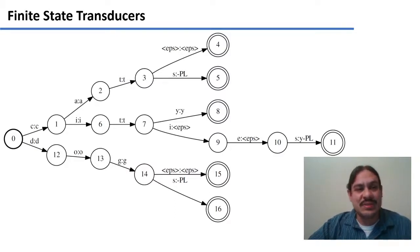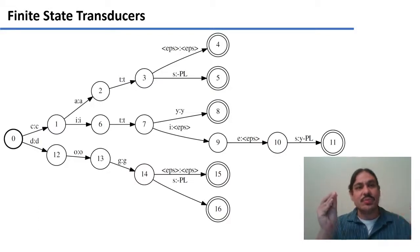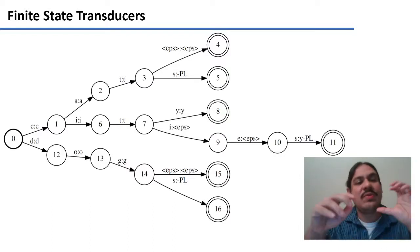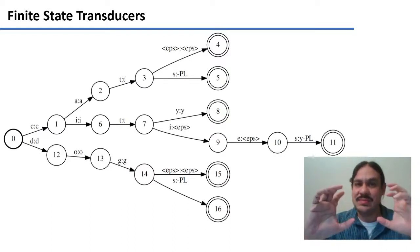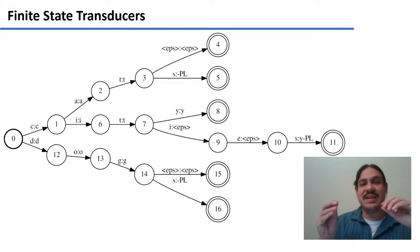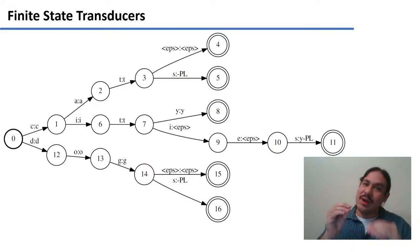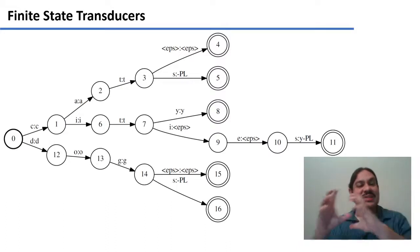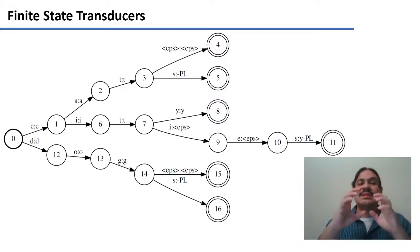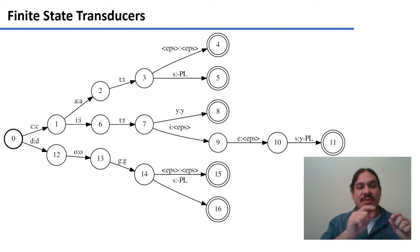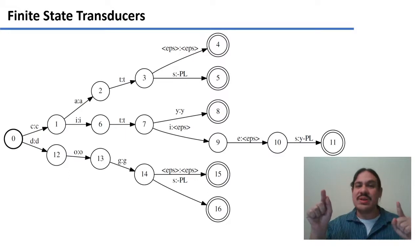We can add another sequence starting from 0 to 1 for the C, where you take input C and produce output C. Then you can go from 1 to 6: that transition takes input I and produces I for the output string. 6 to 7 takes a T, and 7 to 8 takes a Y. So the path 0, 1, 6, 7, 8 produces the word "city".